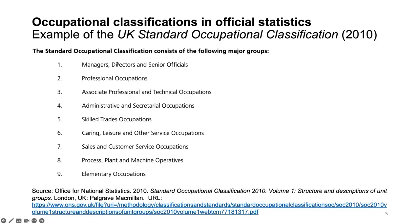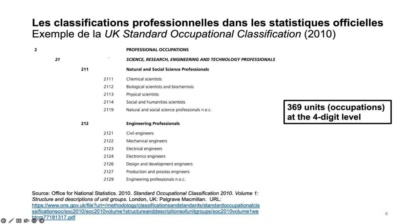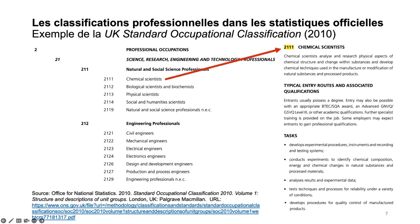As most of you know, there are nine major groups in the UK SOC classification, broken down into sub-major groups at the two-digit level, minor groups at the three-digit level, and unit groups at the most detailed four-digit level. There are 369 unit groups in SOC 2010, and each occupational category is associated with a textual description.